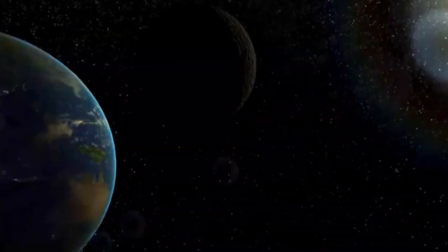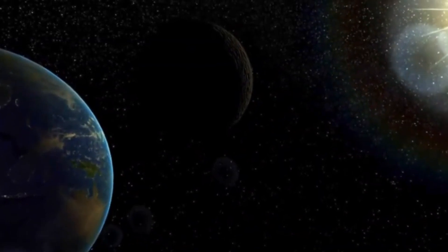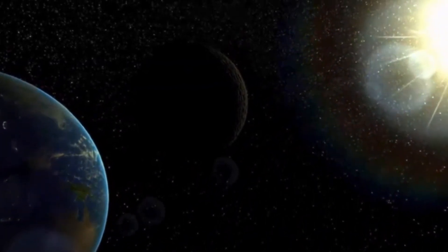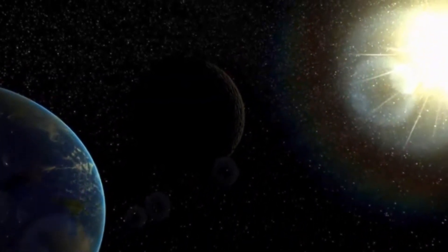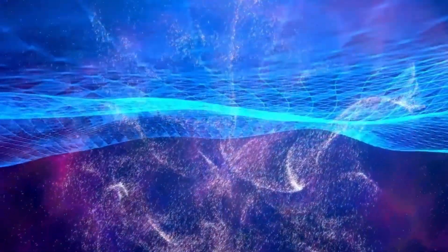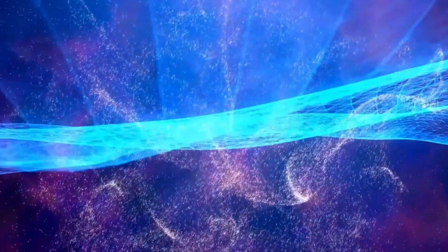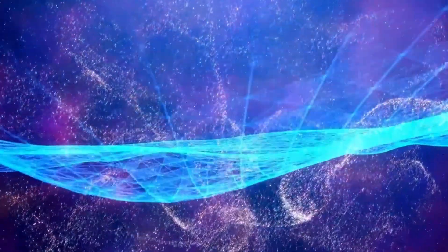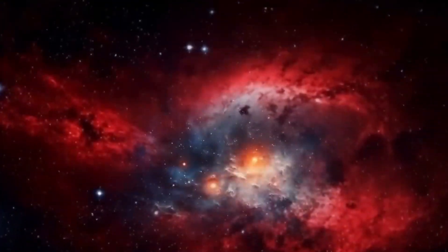Earth-sized planets with atmospheres rich in oxygen, nitrogen, and carbon dioxide, like Earth, could have conditions conducive to life as we know it. However, the absence of expected elements or the presence of unusual compounds could imply alternative forms of life or even mechanical civilizations.